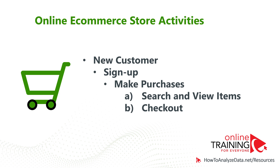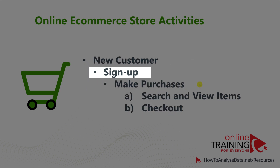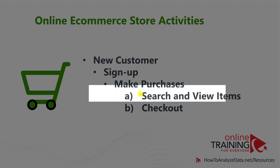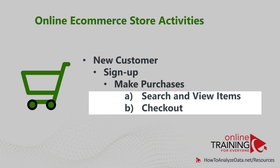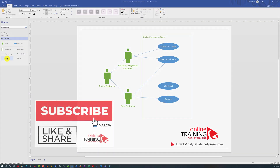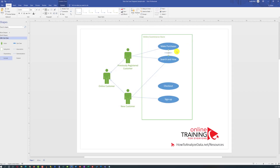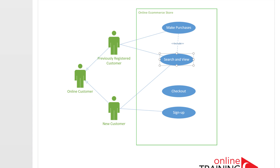In the use case diagram, let's see how a new customer progresses from being a new customer to checkout. Even though a new customer can search and browse items on the online shopping store, we expect the new customer to sign up before they can make purchases. So from the standpoint of the use case diagram, the Make Purchases use case includes the Search and View Items use case, as well as the Checkout use case. To show this, bring in an include shape and connect the two use cases. Now the diagram depicts that Make Purchases includes Search and View.